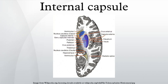The anterior limb of the internal capsule contains fibers running from the thalamus to the frontal lobe, fibers connecting the lentiform and caudate nuclei, fibers connecting the cortex with the corpus striatum, and fibers passing from the frontal lobe through the medial fifth of the base of the cerebral peduncle to the nuclei pontis.